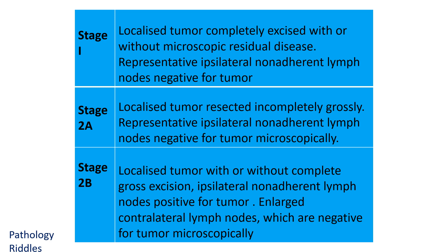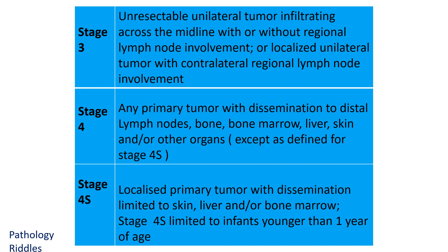In Stage 2B, the localized tumor can or cannot be excised completely; ipsilateral lymph nodes are positive while contralateral lymph nodes are negative. In Stage 3, the tumor is unresectable and infiltrates across the midline, with or without regional lymph node involvement. In Stage 4, the primary tumor has distant metastasis to distant lymph nodes, bone, bone marrow, liver, skin, or other organs. Stage 4S is limited to infants younger than one year of age, with a localized primary tumor and dissemination limited to skin, liver, bone, or bone marrow.